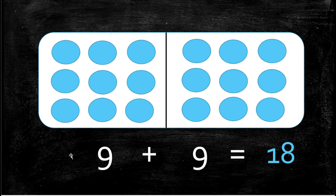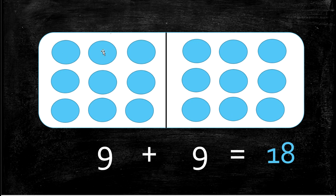Our next double is 9 plus 9 equals 18. We have 1, 2, 3, 4, 5, 6, 7, 8, 9 in this first square, and 1, 2, 3, 4, 5, 6, 7, 8, 9 in our second box. So 9 circles plus 9 circles — how many circles all together? 1, 2, 3, 4, 5, 6, 7, 8, 9, 10, 11, 12, 13, 14, 15, 16, 17, 18. 18 circles all together.